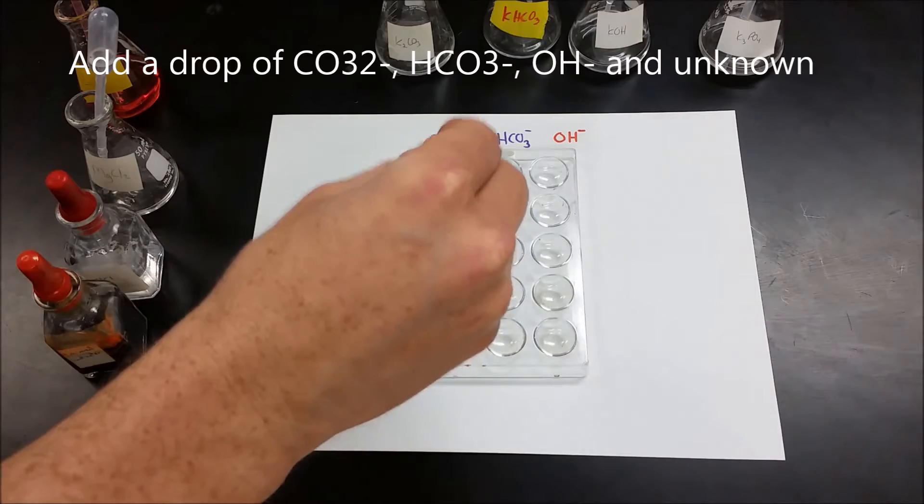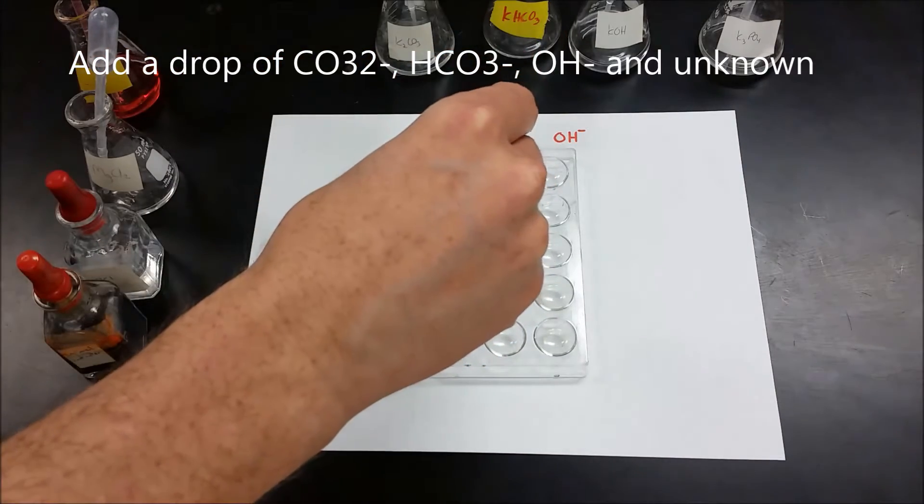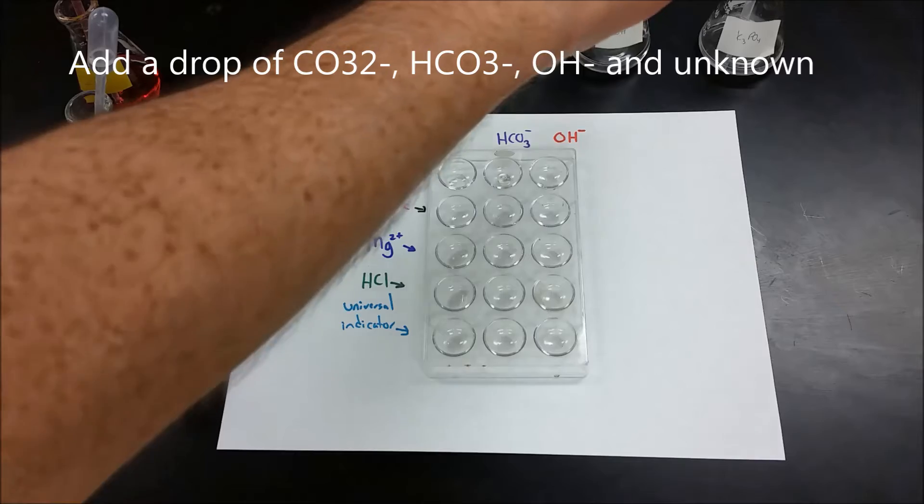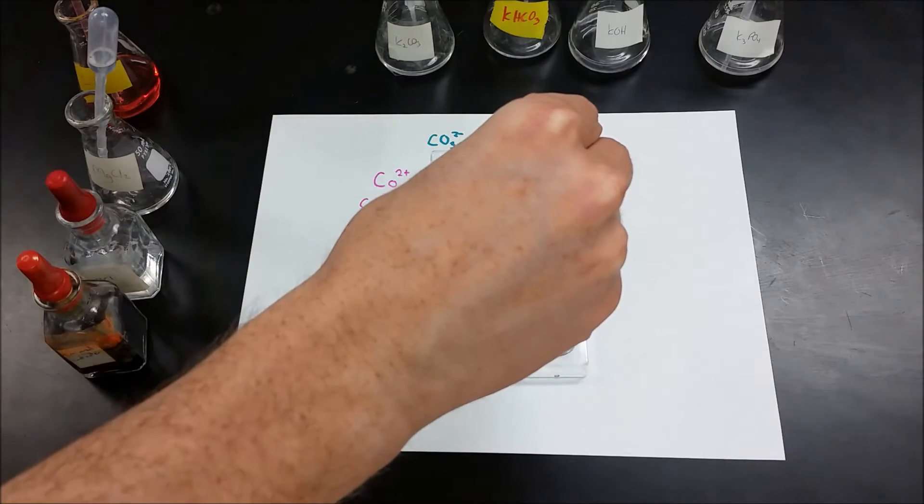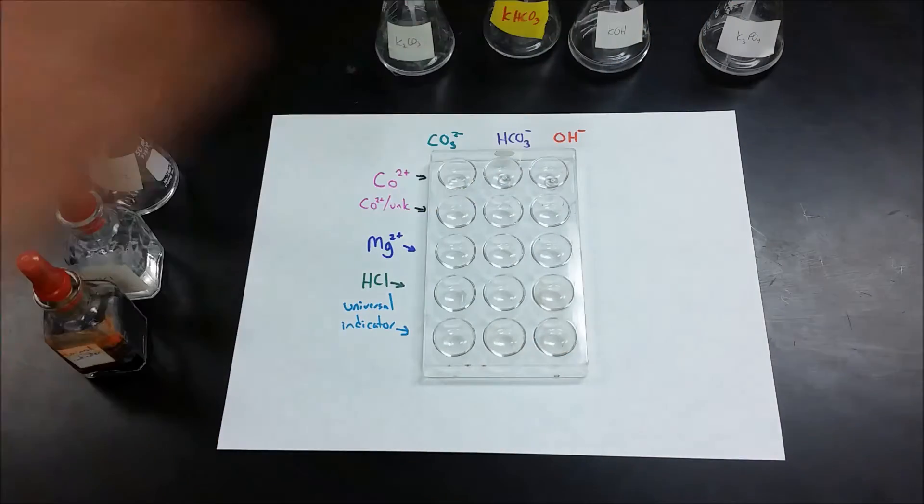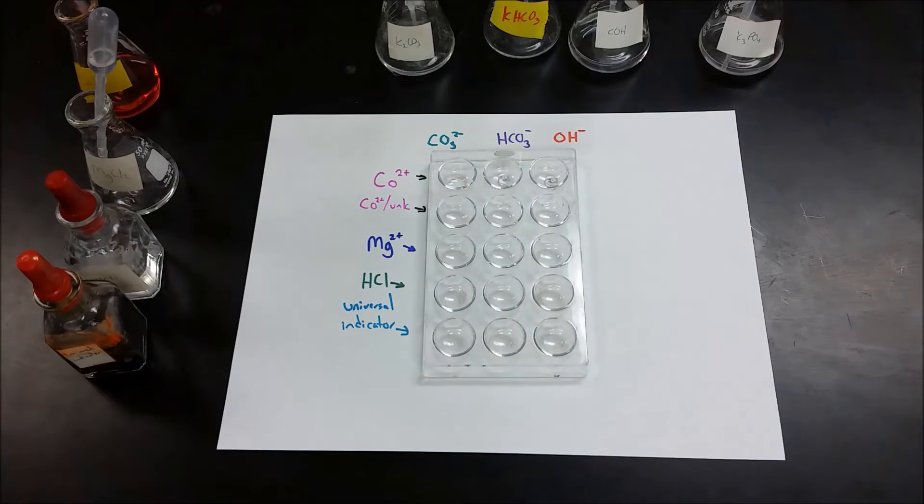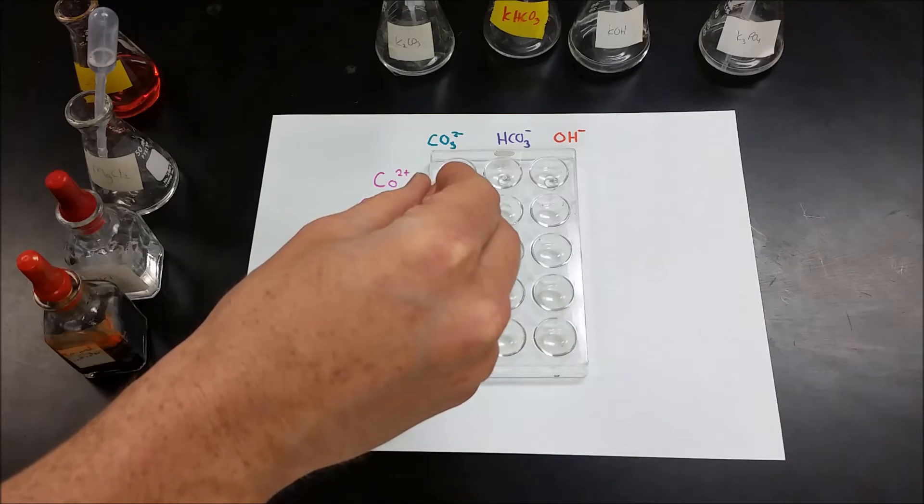First we're going to put a drop of carbonate in there, a drop of bicarbonate in here, and a drop of hydroxide in here, or two. Then we're going to add cobalt to each one. You can do any cobalt solution. I have cobalt sulfate here.